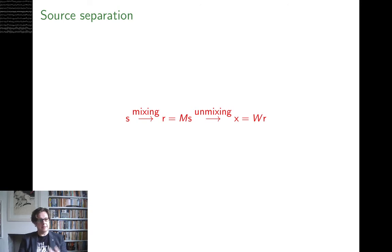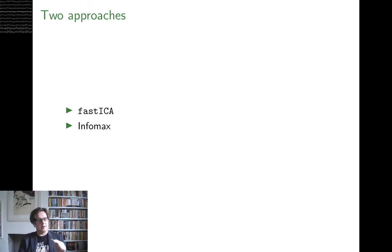So this is the process. Basically, you start off with S, you mix it to get R, so R is equal to M times S, and then we want to unmix it to get X, which is equal to W times R, or WM times S. And there are two approaches.